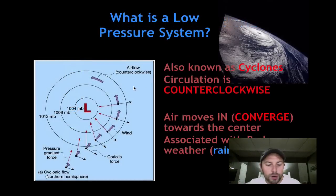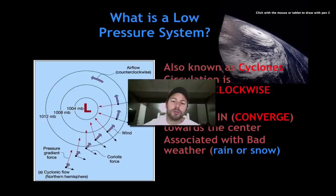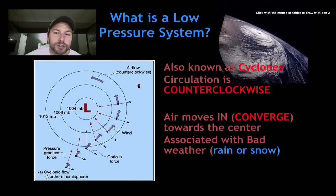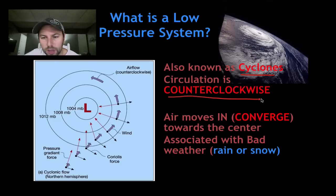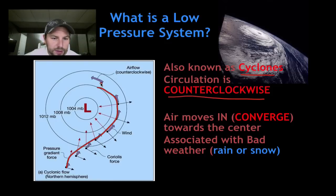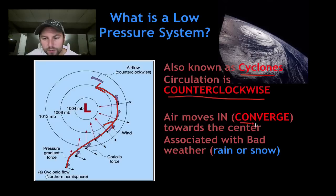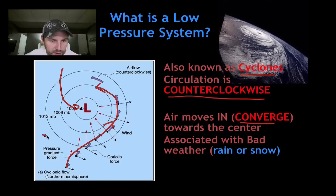The next one is low pressure systems. Low pressure systems are also known as cyclones, and their circulation is counterclockwise. We start from outside and move inwards in a counterclockwise fashion. Air also moves in, or converges, at low pressure systems — starting outwards and moving inward like that. So that's our low pressure system.